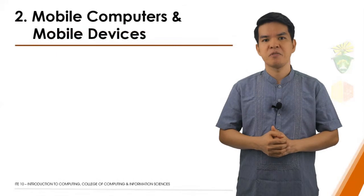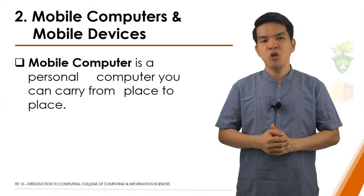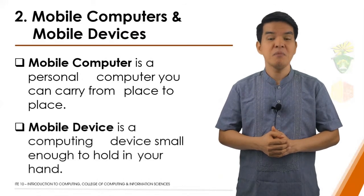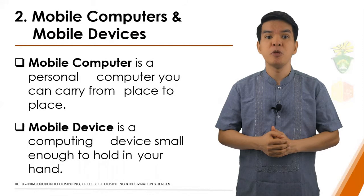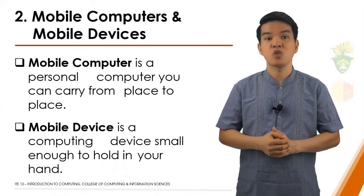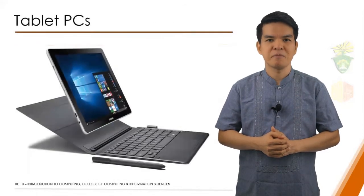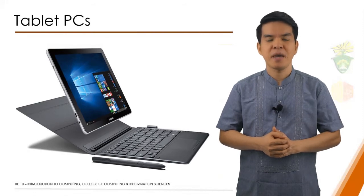The second category is mobile computers and mobile devices. A mobile computer is a personal computer you can carry from place to place. Similarly, a mobile device is a computing device small enough to hold in your hand. The most popular type of mobile computer is the notebook computer. There is also a special type called the tablet PC, which resembles a letter-sized slate and allows you to write or draw on the screen using a digital pen. Samsung Galaxy Note is an example of a tablet PC.